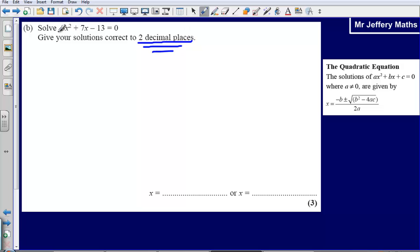Give your solutions correct to two decimal places. You are not being expected to answer this by trying to factorise it. The fact that it says two decimal places or three significant figures means that you are going to use the formula, which I have copied from the formula page at the front. So x is equal to minus B plus or minus the square root of B squared minus 4ac over 2a.